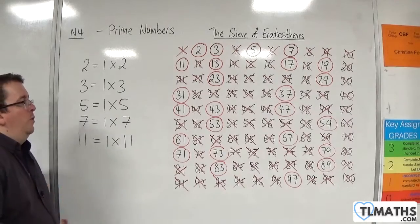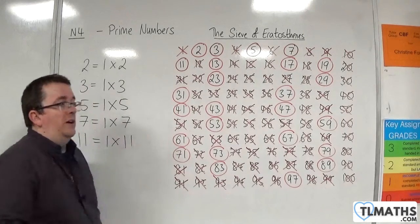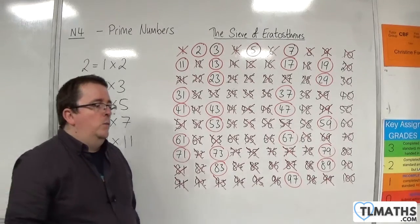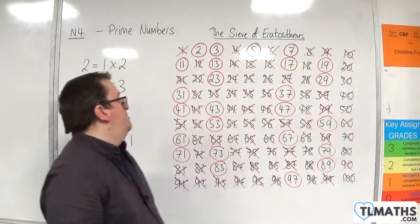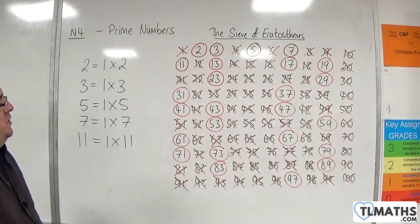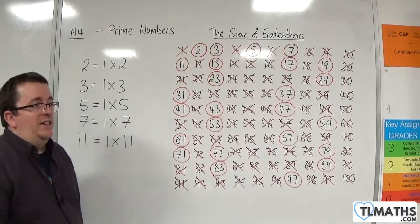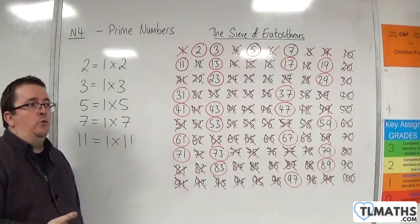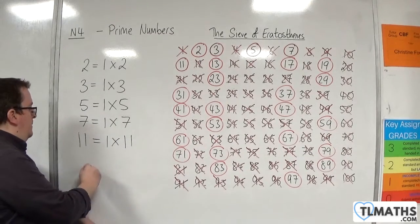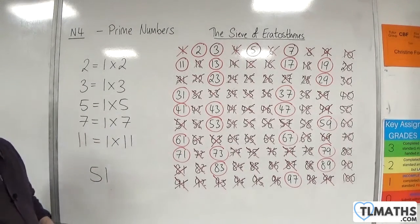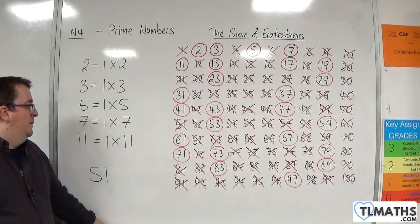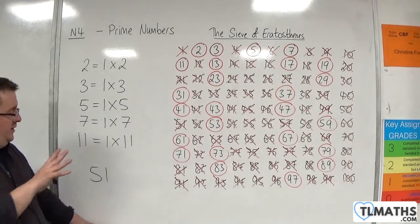Now there are other little tricks that you could employ. So fifty-one for example is likely one that you wouldn't have come across many times because it's three times seventeen. So it's unlikely that you did seventeen threes or learned your seventeen times table. But with fifty-one there is a trick that I can tell me that this has to be divisible by three.